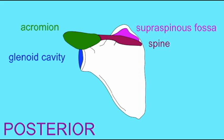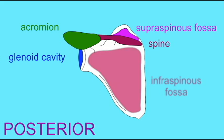Above the spine is the supraspinous fossa. This is the origin of the supraspinatus. Below the spine is the infraspinous fossa. This is the origin of the infraspinatus muscle.